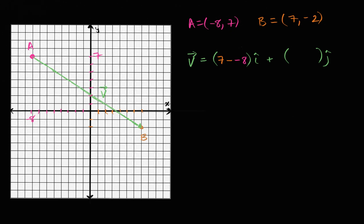So the change in x is going to be the terminal x, seven, minus the initial x, minus negative eight. And our y-component we could just view as the change in y from the initial point to the terminal point. So we finish at the terminal point, so that is negative two, minus our initial y, minus seven.